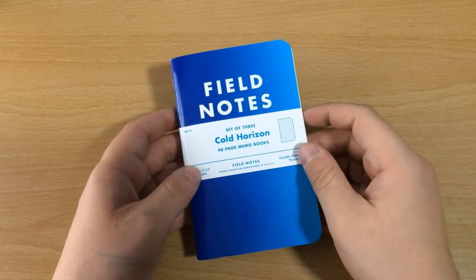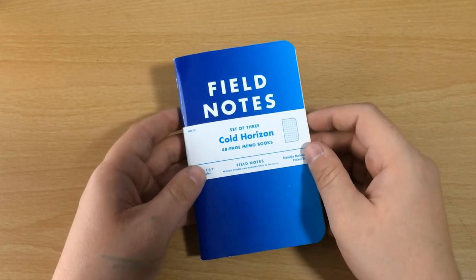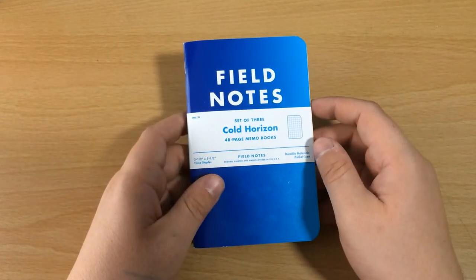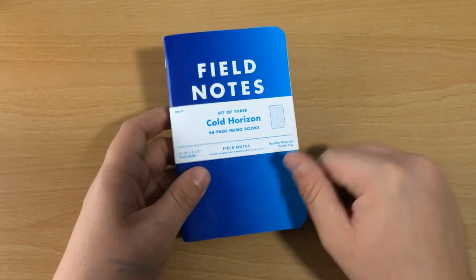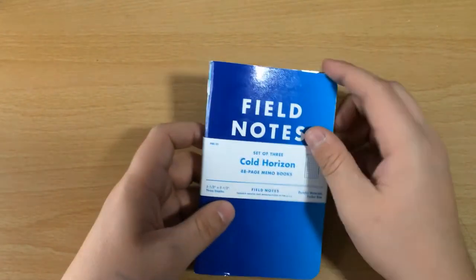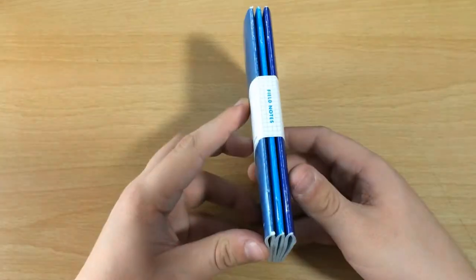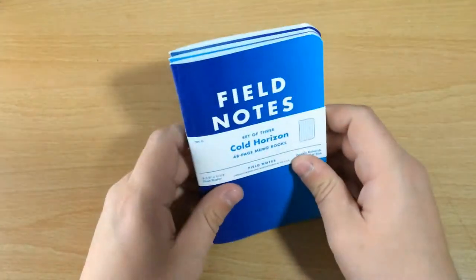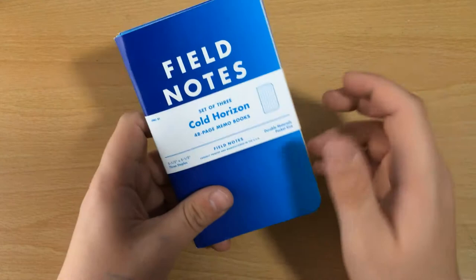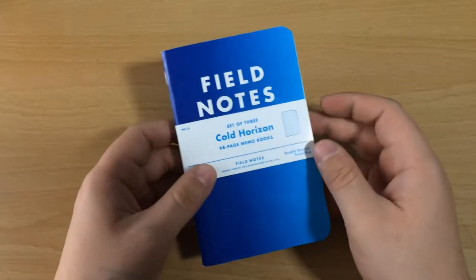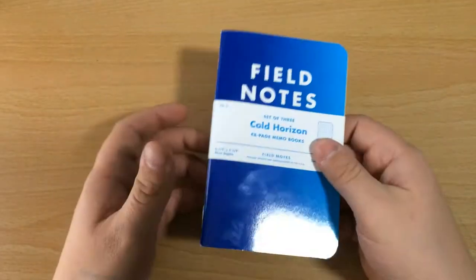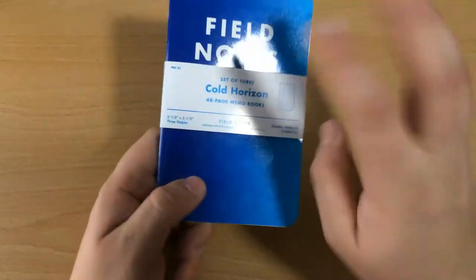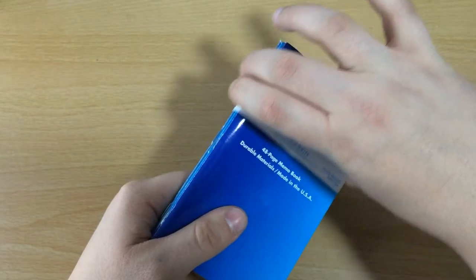All right, so here is the 2013 winter edition from Field Notes. It's Cold Horizon. Just like all other Field Notes editions, it's 5.5 inches tall, 3.5 inches wide, three-eighths inch rounded corners, comes in a pack of three with a belly band. The belly band is slightly more glossy than typical, and there's quite a few very unique things about this edition. They also typically come wrapped in plastic, just a plastic seal.